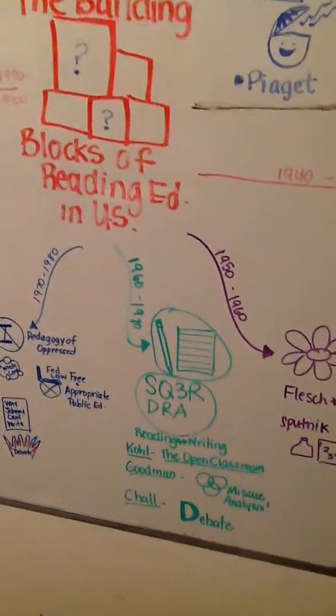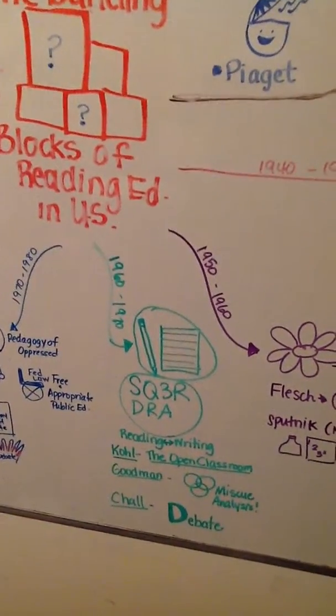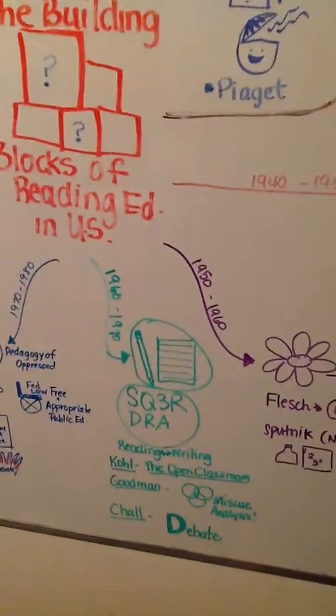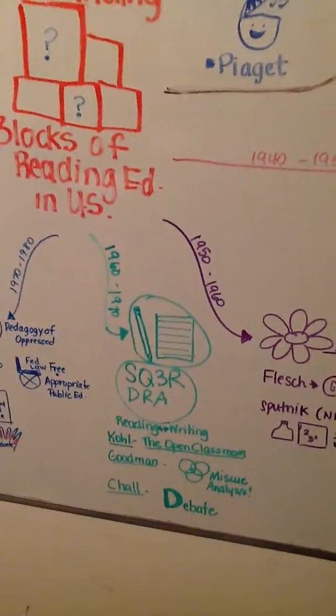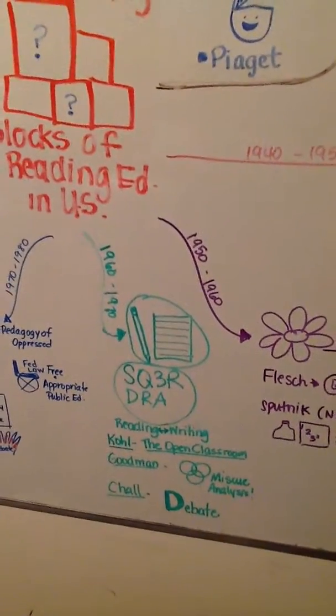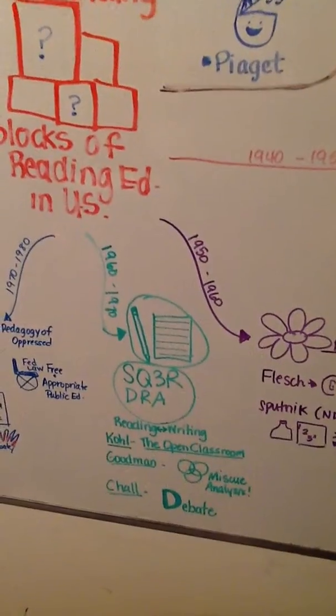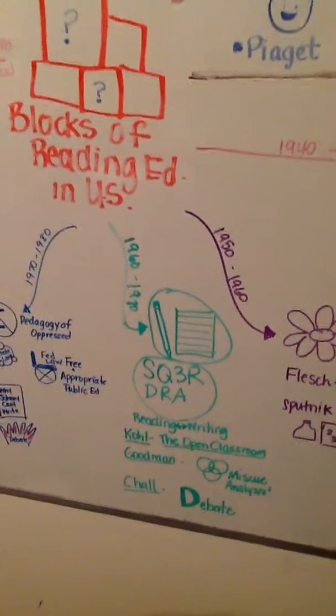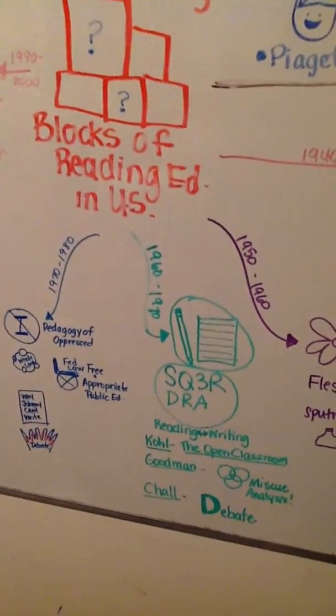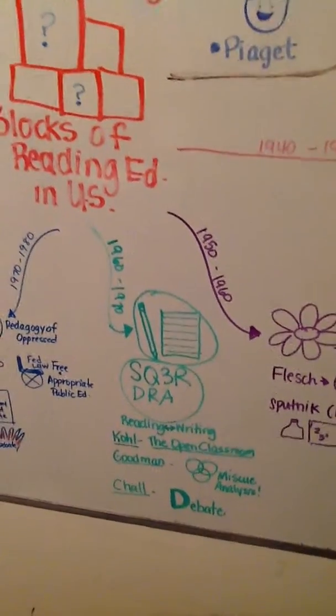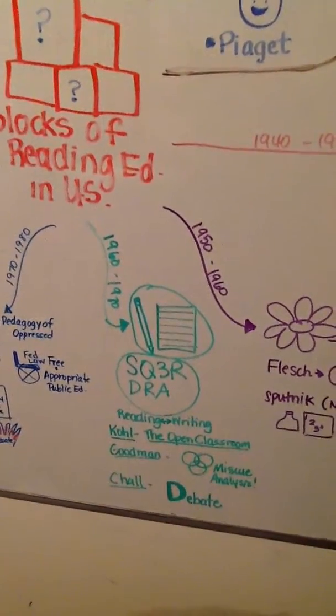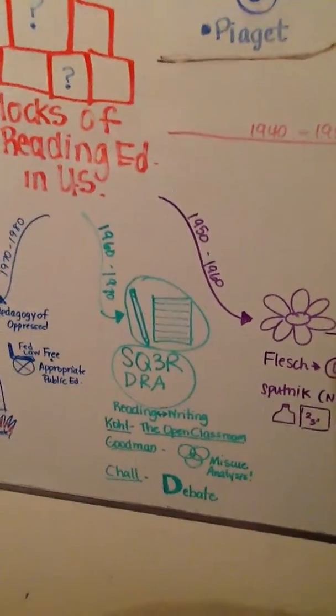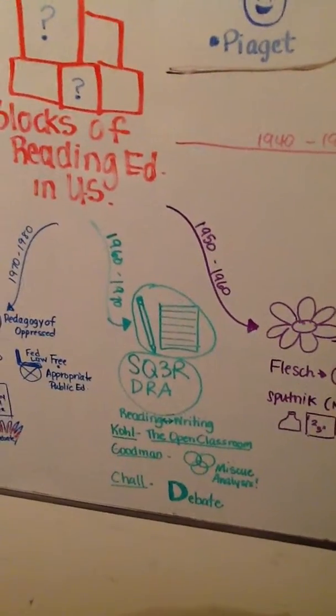The 1960s. This is where writing got big. That's a pencil and paper to show that. We also started with very specific reading strategies to zero in on the people who were struggling. We needed some thinking strategies, so SQ3R and DRA became big. This is also when Cole promoted the open classroom. That's when they felt student-centered classrooms and holistic learning will benefit the children.